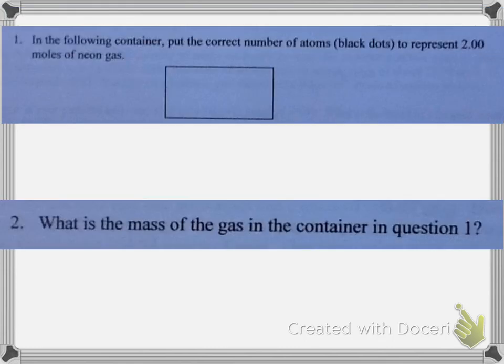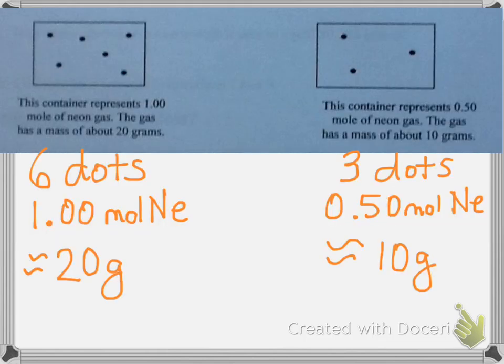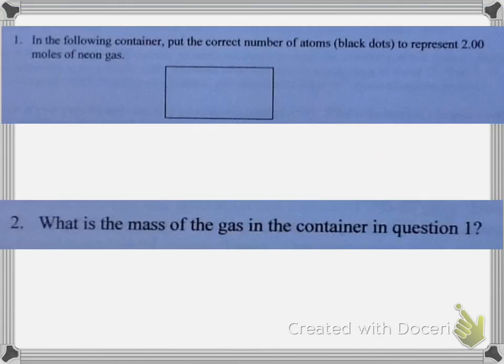Question number one: in the following container, put the correct number of atoms (black dots) to represent 2.00 moles of neon gas. If one mole was six dots, how many dots do I need to have two moles? Twice as many. So I'm going to put 12 dots in here. It doesn't matter where you put them, but you should have 12 dots.